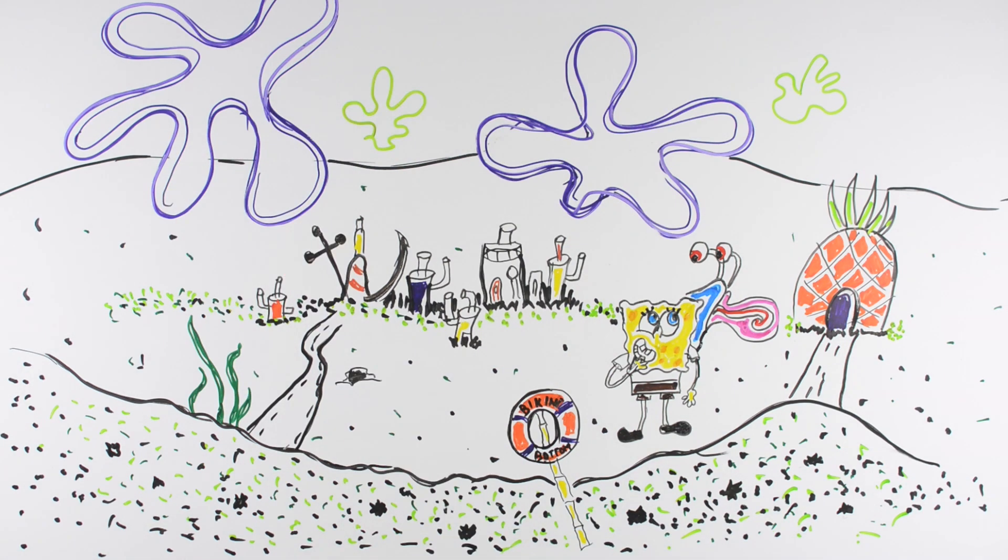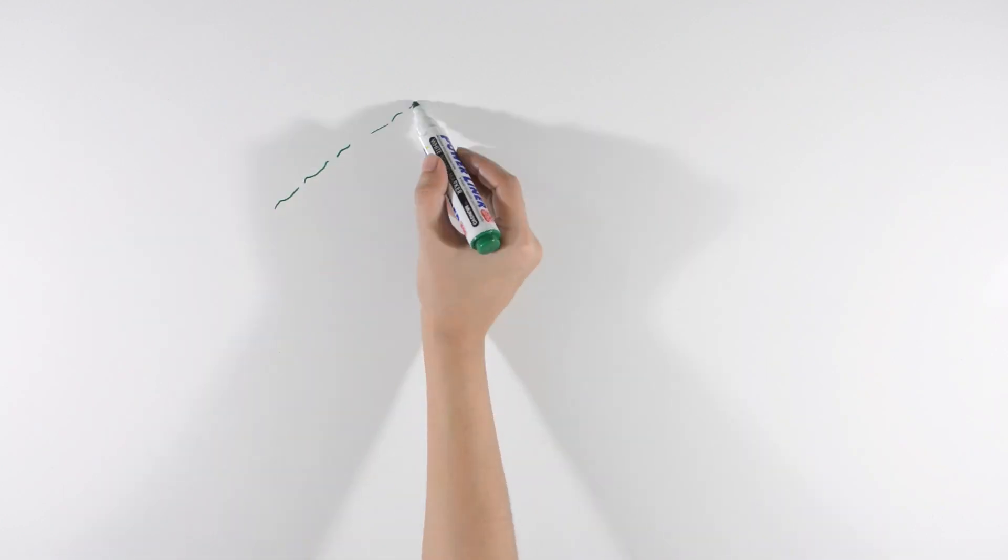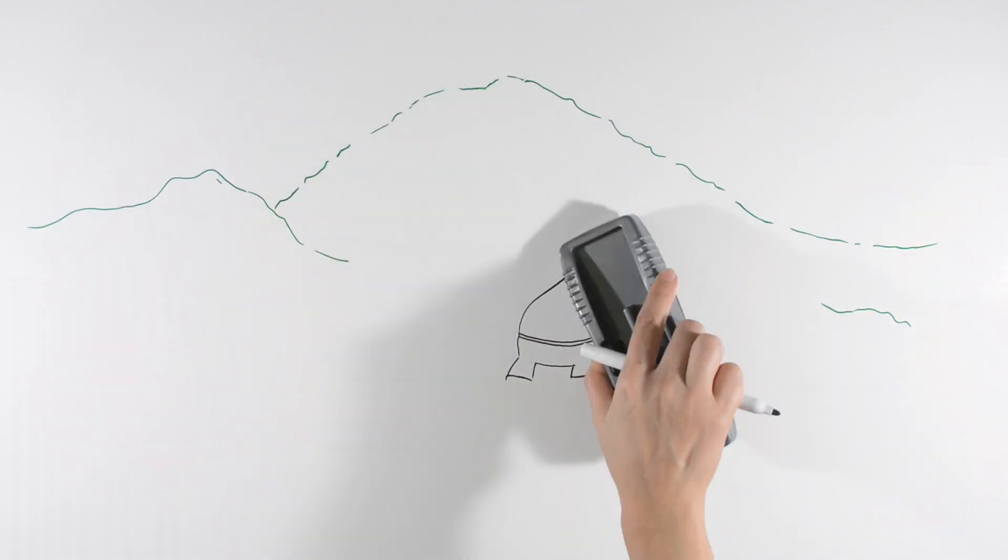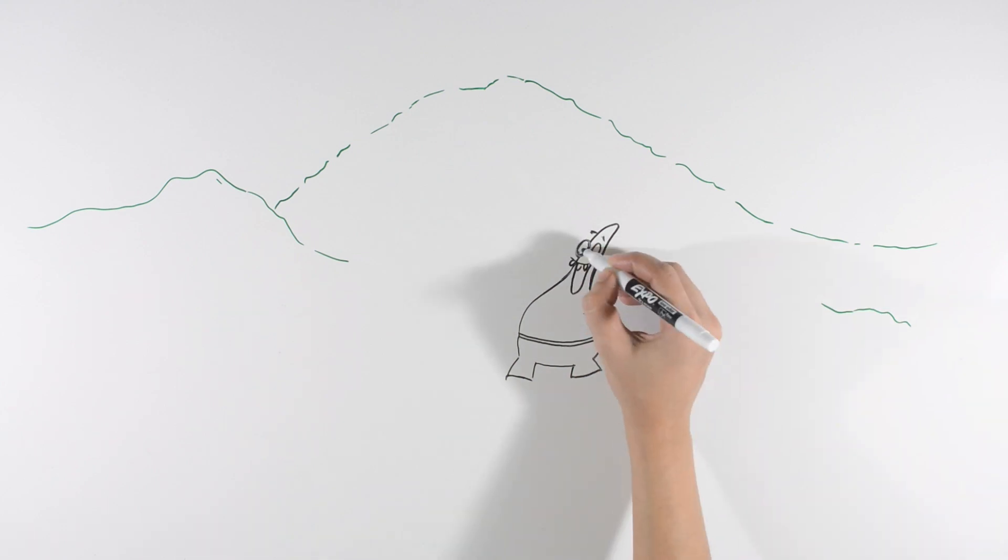A few houses away lives SpongeBob's best friend Patrick Star, a dimwitted yet friendly pink starfish who lives under a rock. Despite his mental setbacks, Patrick sees himself as intelligent.